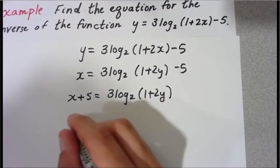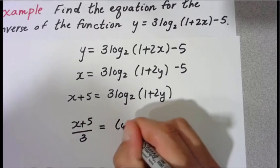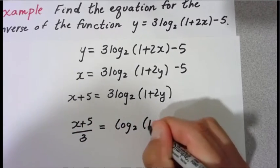Now the log is being multiplied by three still. Let's get rid of the three. So we're going to divide each side by three. So you have x plus five over three equals log base two of one plus two y.